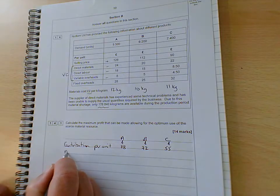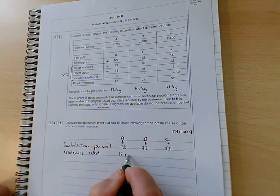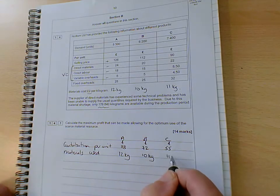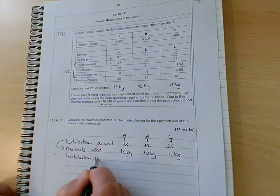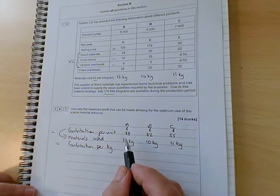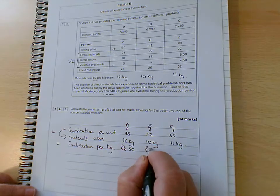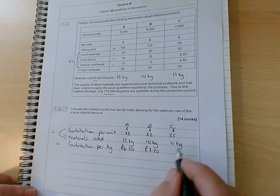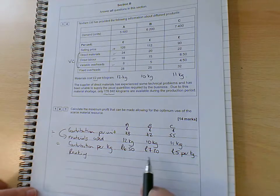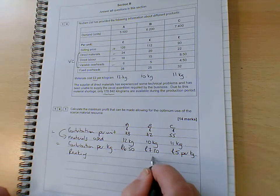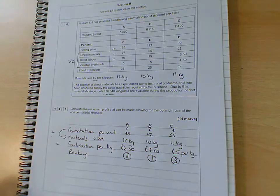But what we need to do is work out the materials used. So the number of kilos that goes into making each product, so we've got 12, 10, and 11, respectively. 10 kilos and 11 kilograms. So if we divide contribution by the materials used, that gives us the contribution per kilogram. And this is going to be the key to solving this question. So if we divide 78 by 12, that gives us a contribution per kilo of six pounds 50. If we divide 72 by 10, that's going to give us seven pounds 20 per kilo. And 55 divided by 11, gives us five pounds per kilogram. So what we can then do is rank the products, give them a ranking. So the one with the highest contribution per kilogram, not per unit is number one. So that's product B. The next highest is product A. So that's going to be number two. And the lowest contribution per kilo is product C.